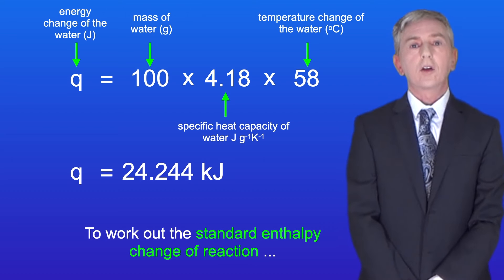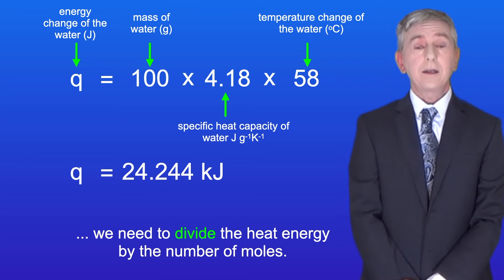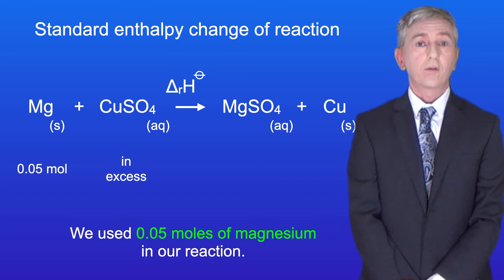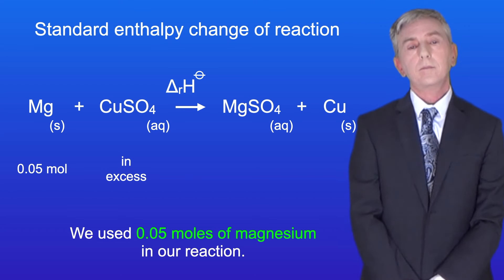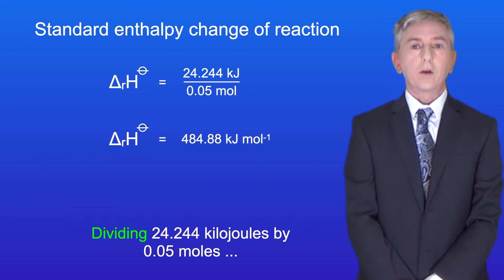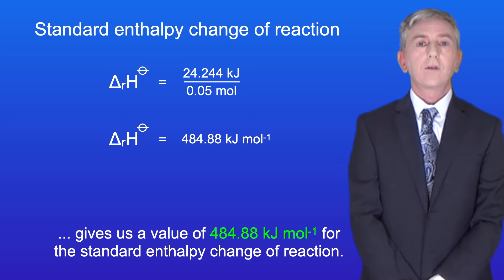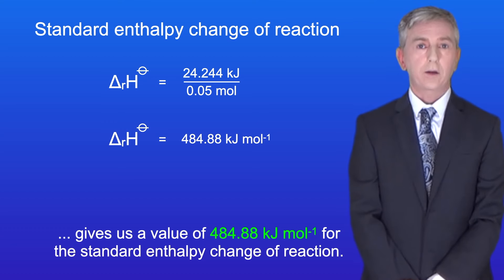To work out the standard enthalpy change of reaction, we need to divide the heat energy by the number of moles. We use 0.05 moles of magnesium in our reaction. Dividing 24.244 kilojoules by 0.05 moles gives us a value of 484.88 kilojoules per mole for the enthalpy change of reaction.